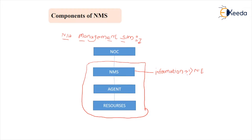The first thing is every network element, and the second is the data exchanged between different network elements. To save all these things, NMS requires a database called MDB — that is the Management Database. MDB is also known as the real database, as it contains information about the present state as well as the past state of every network element and data exchange between them.